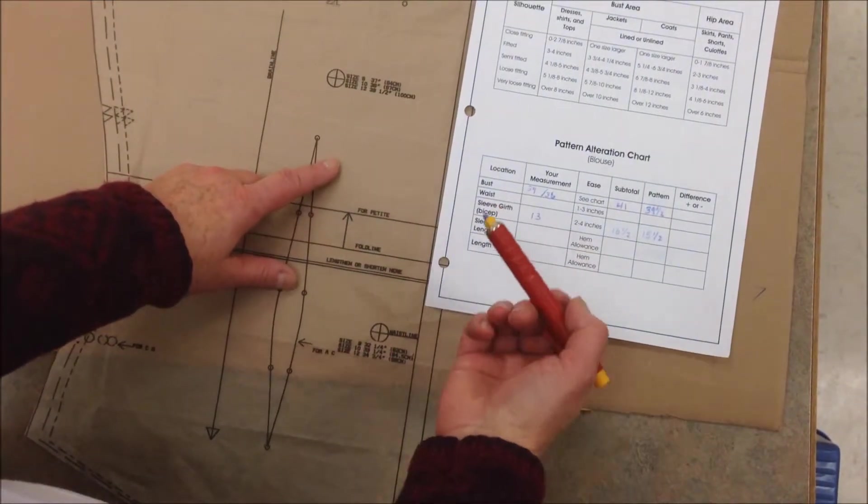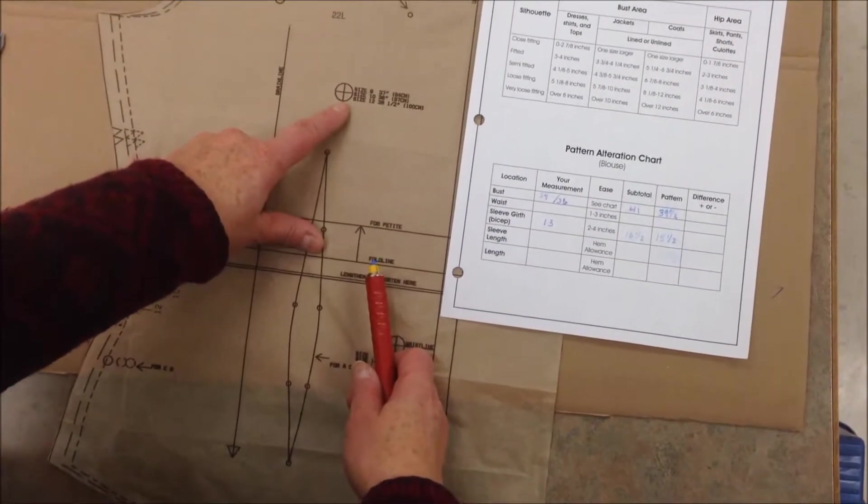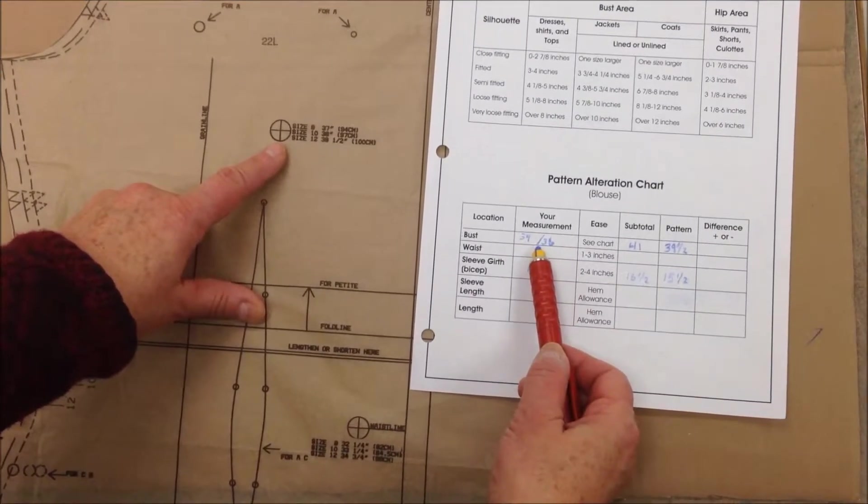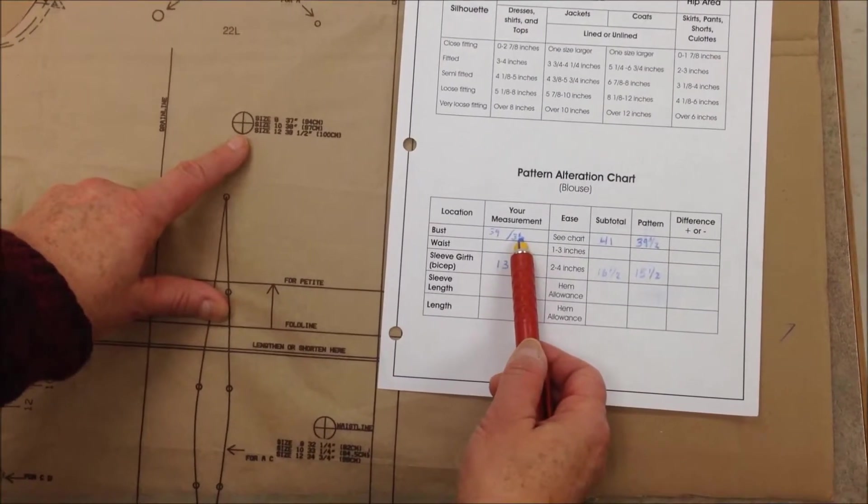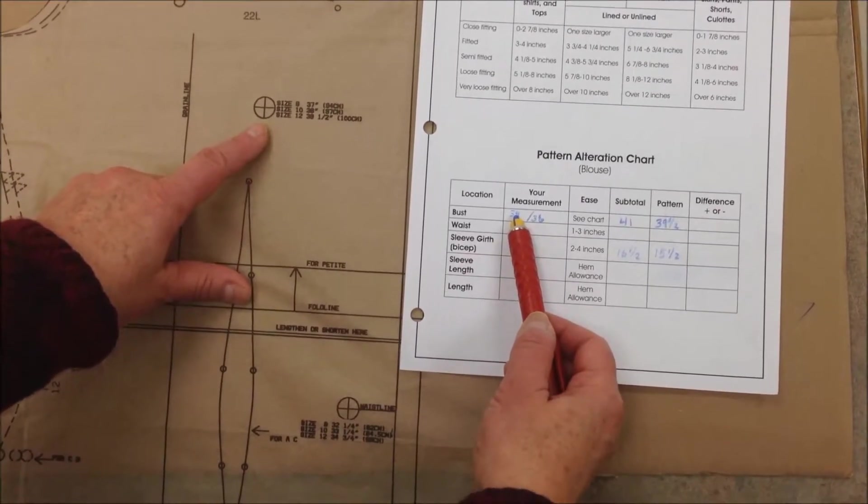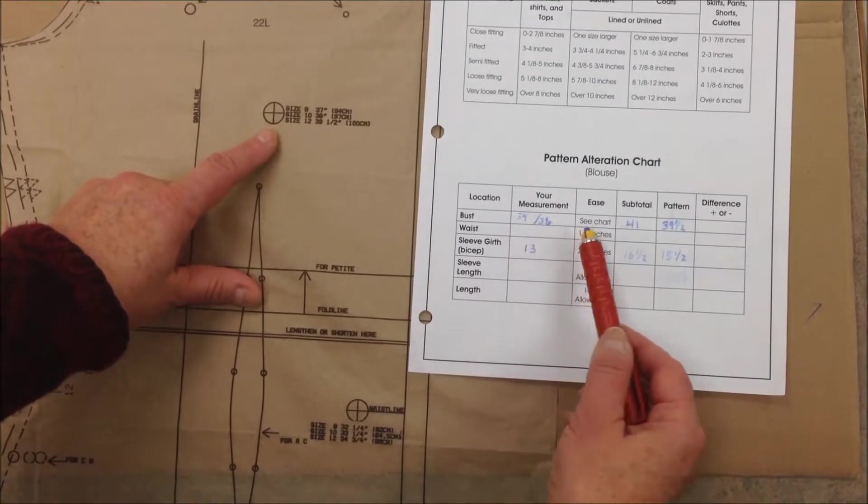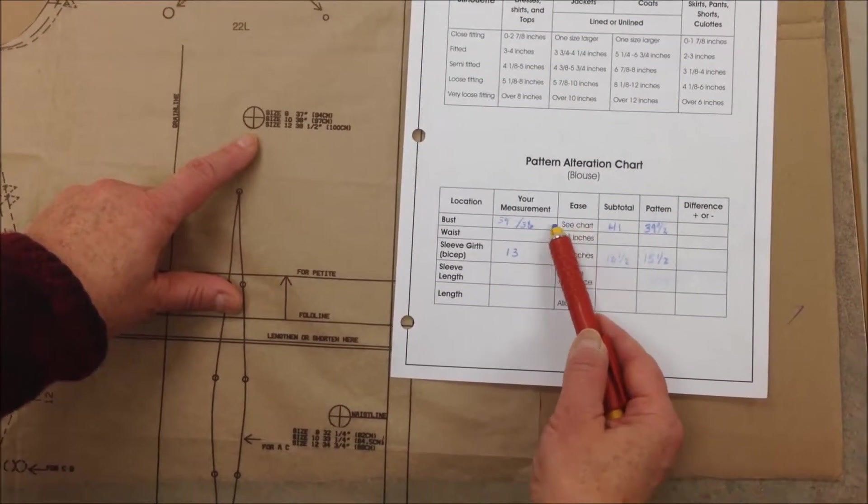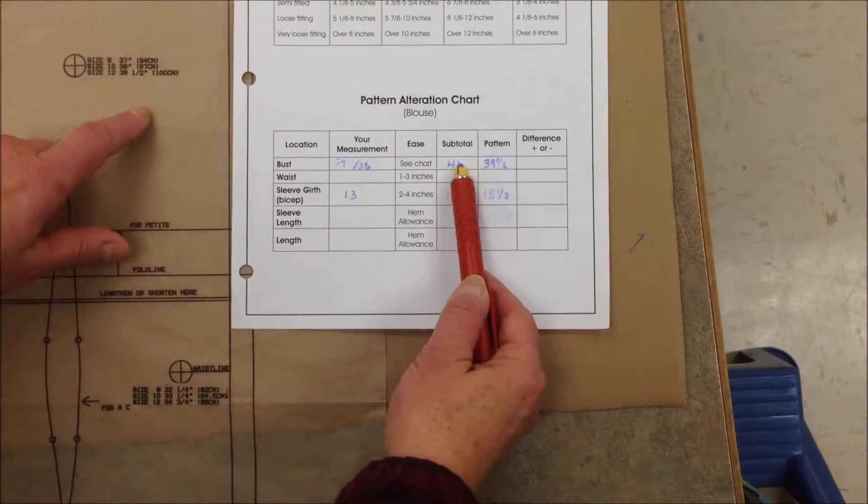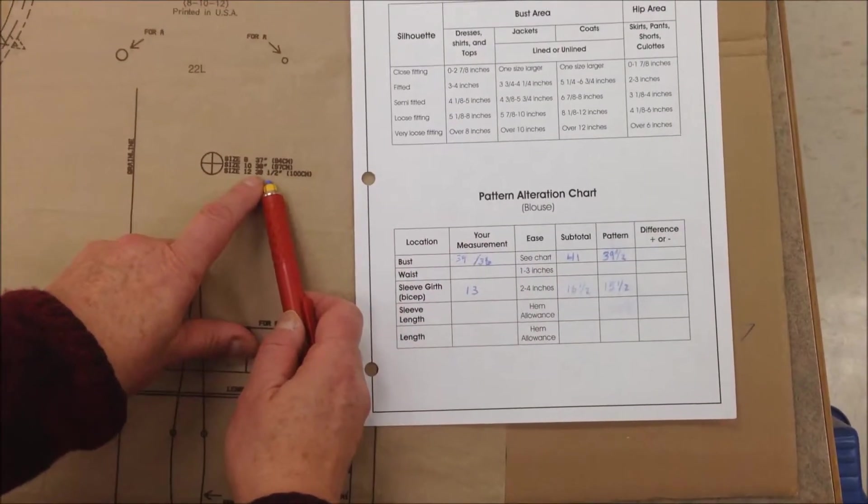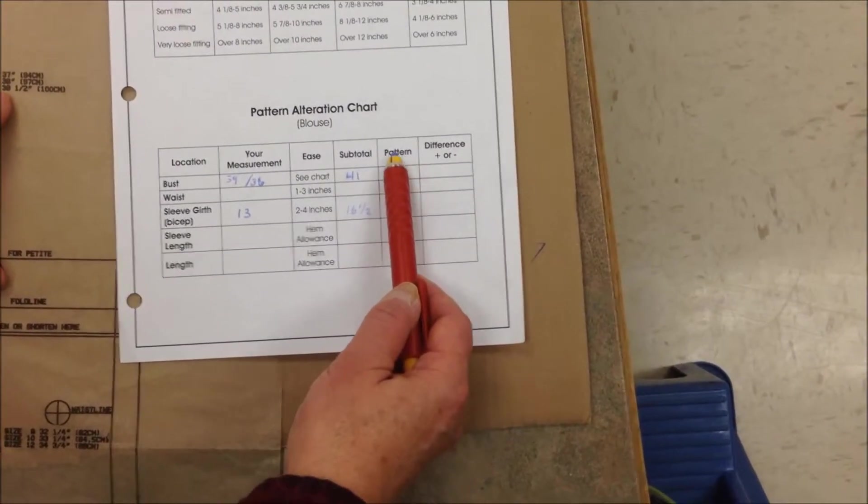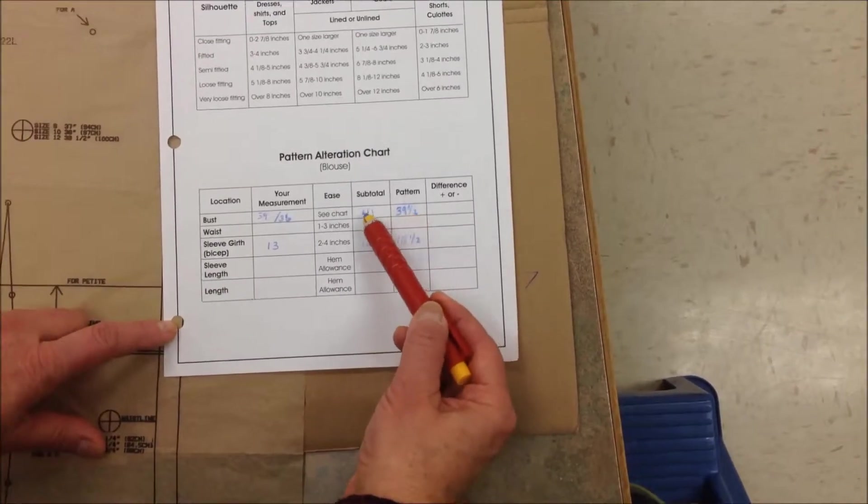We need to look at your body measurements and the finished garment measurement for the bust area. So I've written down high bust is 34 but full bust is 36. We're going to actually choose the smaller size, a size 12, and increase the bust area. If we want 5 inches of ease we're going to add 5 inches to 36 which gives us 41. When we look at the finished garment measurement for a size 12 that gives us 39.5.